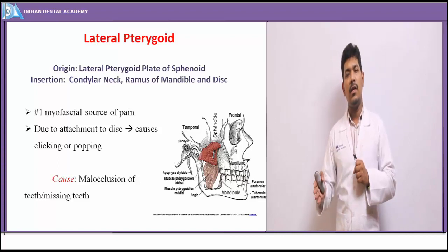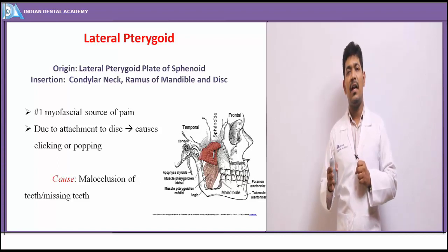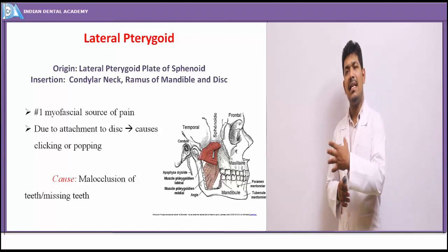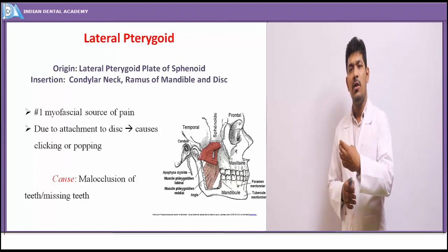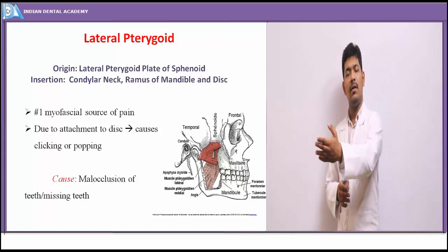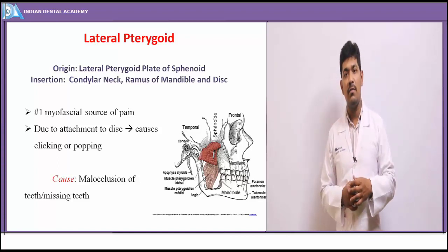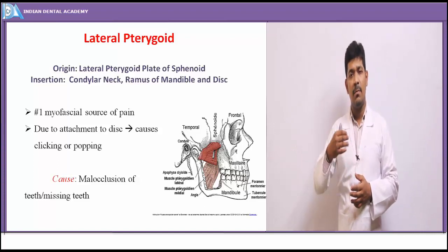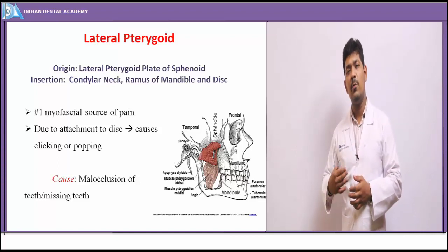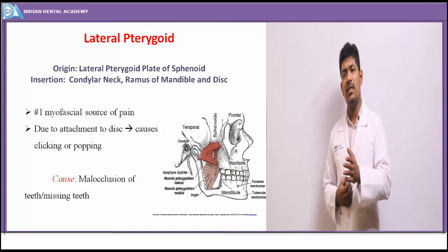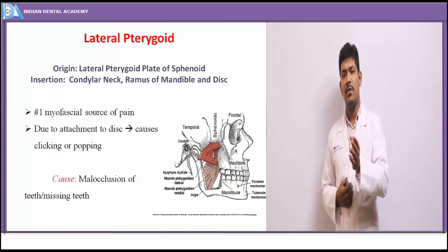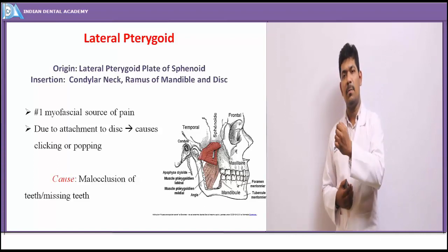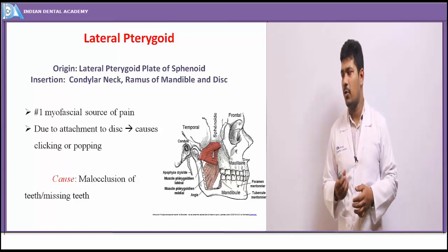The most common intraoral cause is malocclusion or any parafunctional habits causing disturbances in normal TMJ functioning. Parafunctional habits are habits which do not have any positive effects on the oral musculature but have an adverse effect. These include parafunctional habits such as clenching or bruxism.